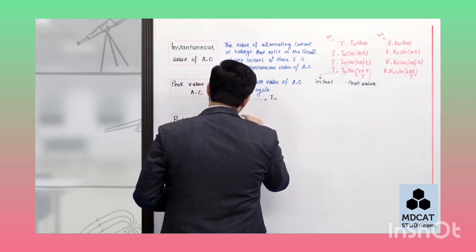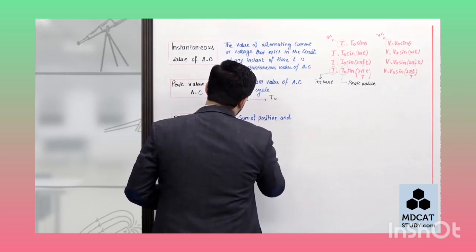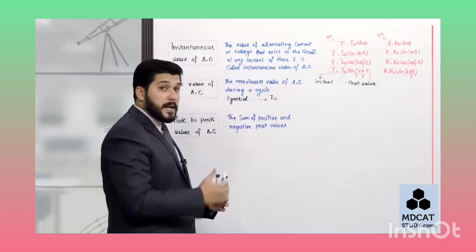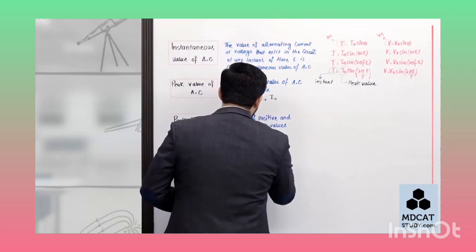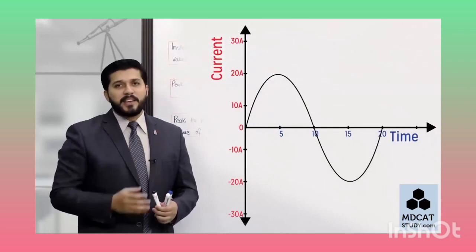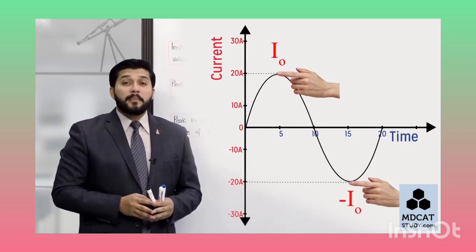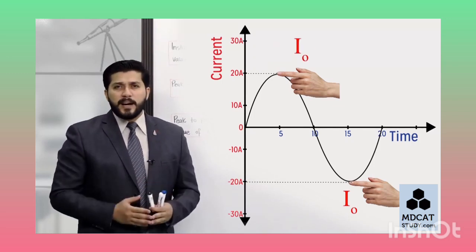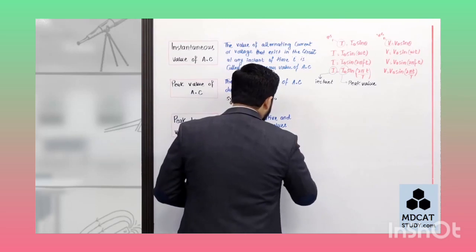Peak to peak value کی definition: The sum of positive and negative peak values۔ اسے p-p value بھی کہتے ہیں۔ ہمارے syllabus کے لیے symmetrical sine curve کے لیے: اگر positive peak i₀ ہے تو negative peak بھی i₀ ہوگی (direction مختلف)۔ Negative sign ignore کریں تو peak to peak value = i₀ + i₀ = 2i₀ ہوگی۔ یاد رکھیں: ہمارے syllabus کے لیے symmetrical sine curve میں peak to peak value = 2i₀ ہوتی ہے۔